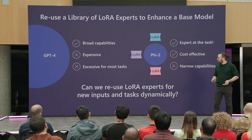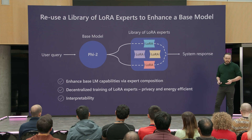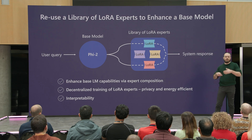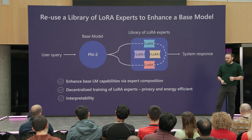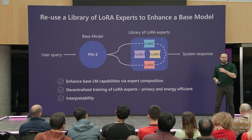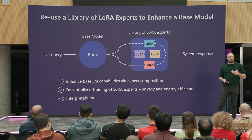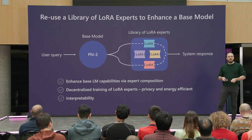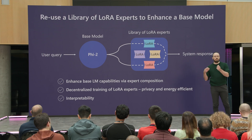Let me show you how this system could work. We start from a base model, which is Phi-2, and we adapt this base model for every user or for a set of tasks. We group these adapters into a library. Then we come up with an orchestration mechanism that chooses which adapters to use based on a new user query to produce a system response.